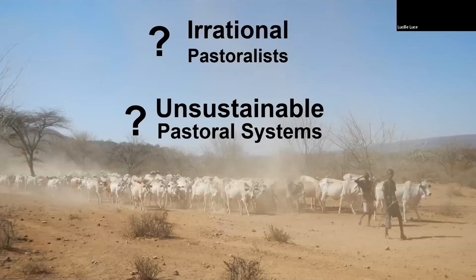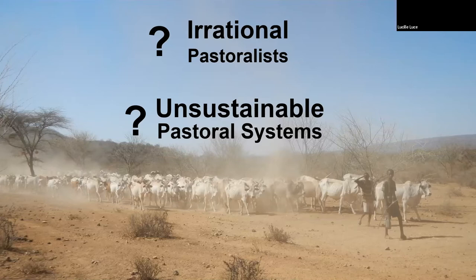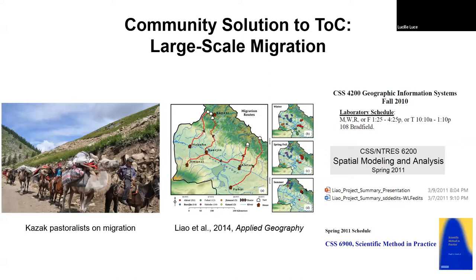Looking at a photo like this, people are more likely to be convinced by Hardin's argument — that pastoralists are irrational and their behavior leads to unsustainable pastoral systems. This is a picture I took in my fieldwork in southern Ethiopia. However, this is somewhat biased because as scholars we always go in the dry season. The solution to the tragedy of the commons I discuss is large-scale migration — in far northwestern China, pastoralists migrate between the Gobi Desert and outside mountains, covering distances over 300 kilometers one way.